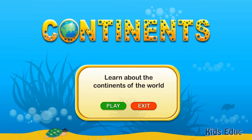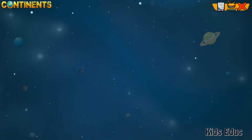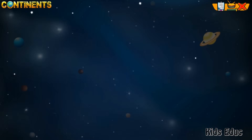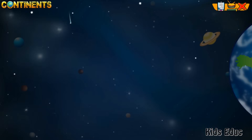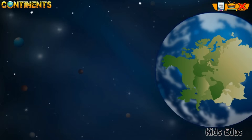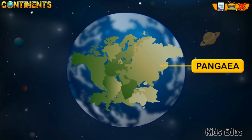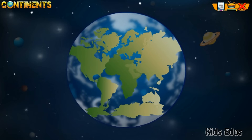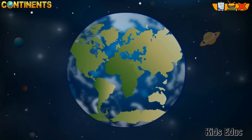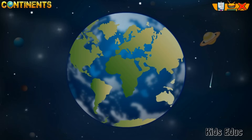Hello kids, let's learn about the continents of the world. Around 200 million years ago, the Earth contained a single land mass named Pangaea. These land masses are moving at a few centimeters every year.